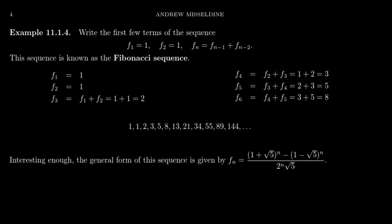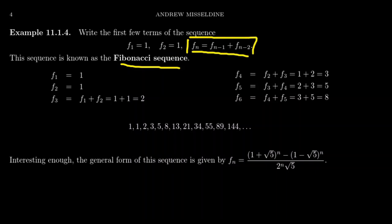Let's look at one more example — a recursive sequence that involves two base cases. This is the Fibonacci sequence, for which we define the first term F1 to be one and the second term F2 to also be one. The Fibonacci sequence is then based on the following recursive relation: the next term in the sequence is the sum of the two previous terms.